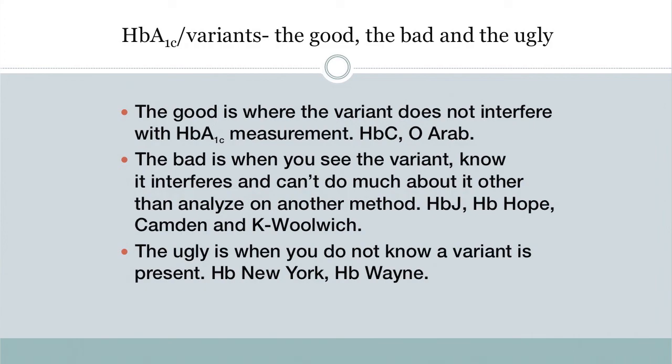Let's look at hemoglobin variants: the good, the bad, and the ugly. The good is where the variant does not interfere with A1c measurements — typical of hemoglobin C and hemoglobin O Arab. The bad is when you can see the variant, know it interferes, but can't do much about it — hemoglobin J, hemoglobin Hull, hemoglobin Camden, and hemoglobin K Woolwich. The ugly is when you do not know a variant is present, such as hemoglobin New York or hemoglobin Wayne, which we discussed earlier.